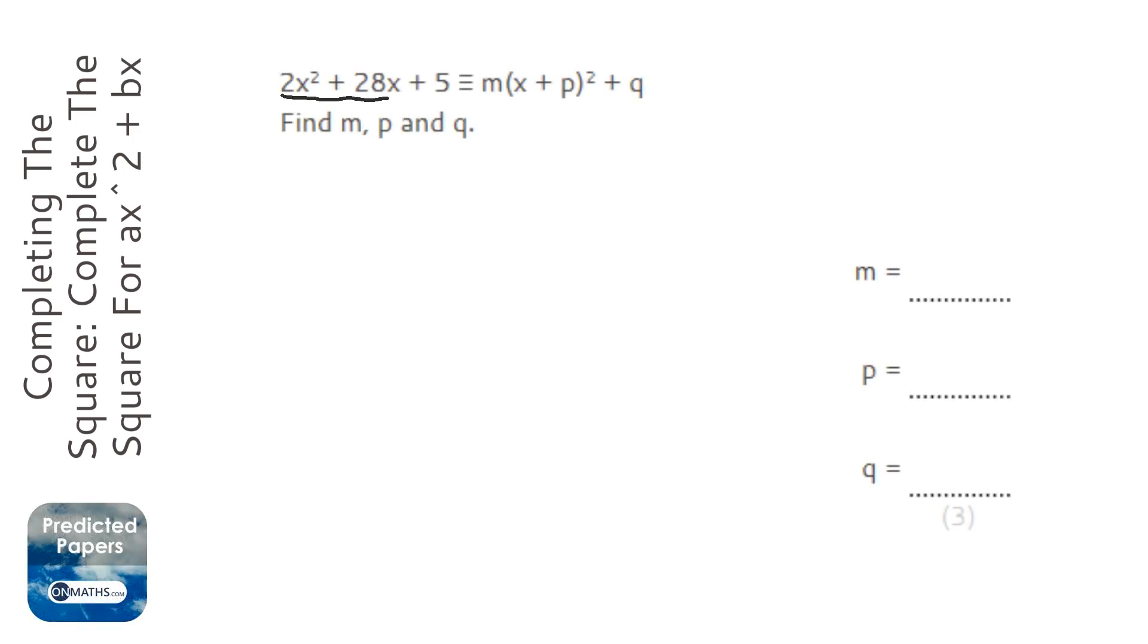In this question we're given this bit here and we're asked to rearrange it to make it look like that. Remember we don't use the right hand side at all in our answers, that's there as a guide of what it wants us to do. This triple equal sign means it's completely equivalent to, works for all values of x, so it basically means it's an identity.